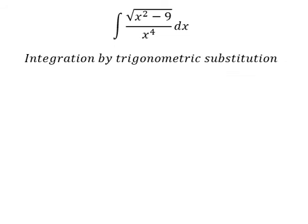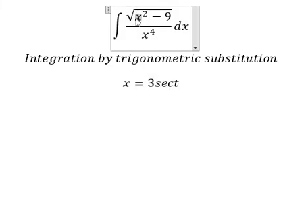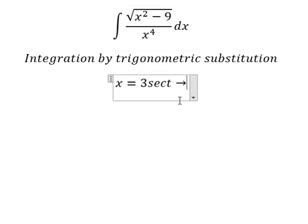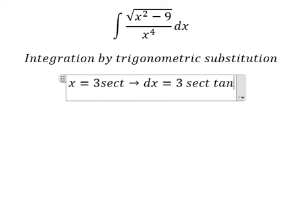I will put x equal to three secant of t. With this substitution, we have nine secant squared of t, and with factorization we get secant squared t minus one, which we replace with tan squared t, and then simplify the square root. We differentiate both sides and get dx equals three secant t tan t dt.